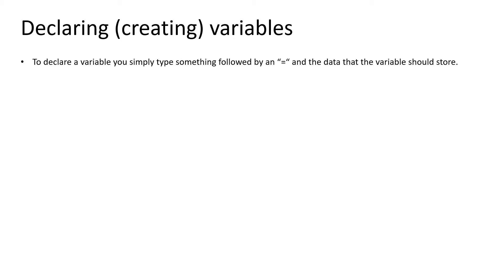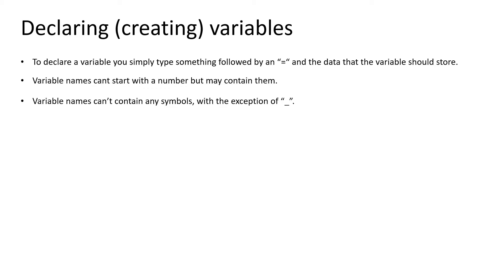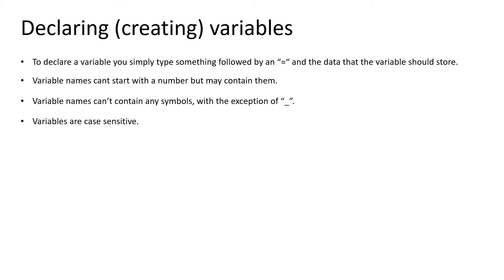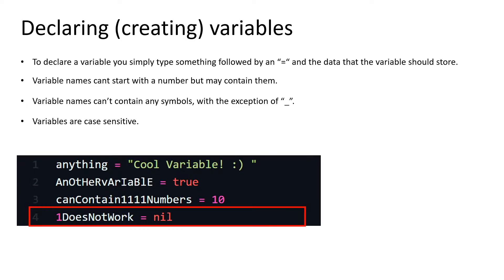To declare a variable, you simply type a name followed by an equal sign and the data that the variable should store. Variable names need to start with a letter, but may contain numbers and the underscore character. All variables are case sensitive. Here are four examples of variables. The first three are correctly declared and will work just fine, while the fourth one breaks the rule by starting with a number, which would cause your program to crash.